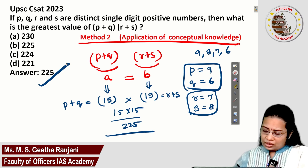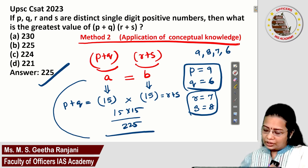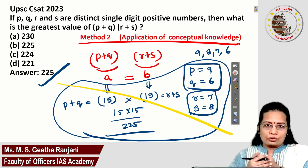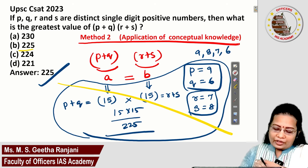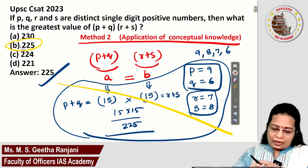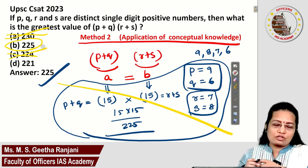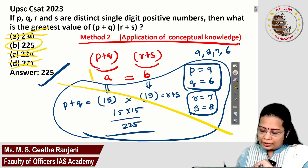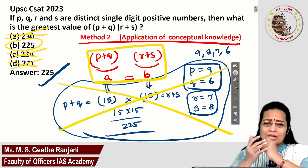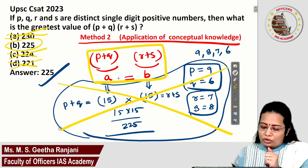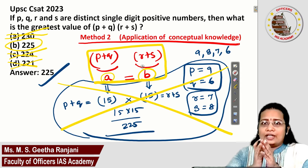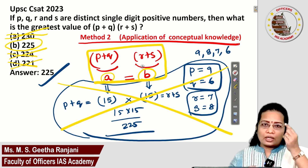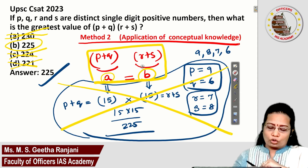Without doing these calculations, can we get the answer directly? Yes. The question is designed so that only one of the options is a perfect square. A is not a perfect square, B (225) is a perfect square, C is not a perfect square, D is not a perfect square. If you know this concept alone — that A=B gives a perfect square as the greatest value — you can immediately identify option B, 225, as the answer.